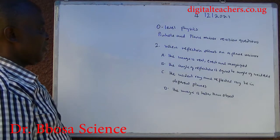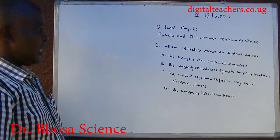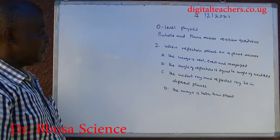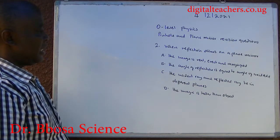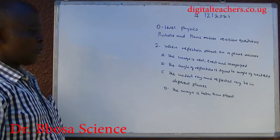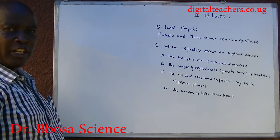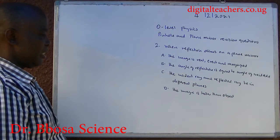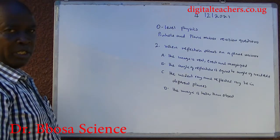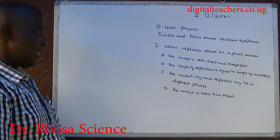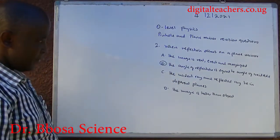Number two: when reflection occurs on a plane mirror, A, the image is real, erect and magnified; B, the angle of reflection is equal to the angle of incidence; C, the incident ray and the reflected ray lie in different planes; D, the image is taller than the object. You can pause and answer. The answer is B.